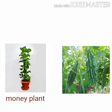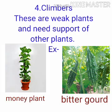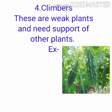Number 4: Climbers. These are weak plants and need the support of other plants. For example, money plant and bitter gourd.